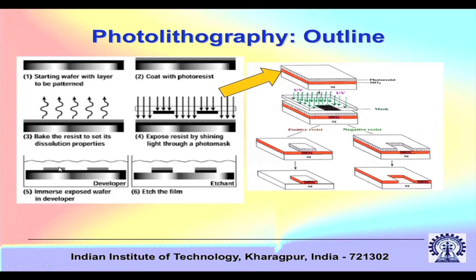You have now successfully transferred the pattern from the mask to the substrate. Then you can use an etchant to etch the film. The part exposed to the etchant is removed, the SiO₂ black part is gone, and only the part not exposed to the etchant remains. As a result, a groove-like structure is formed on the silicon substrate.